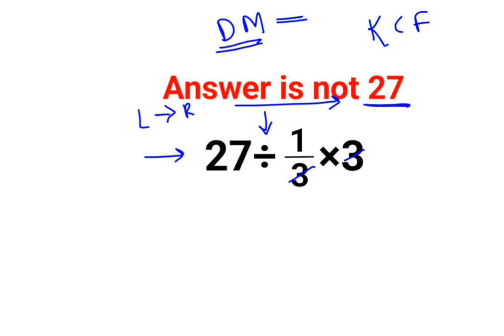So answer for this one comes out to be what? K stands for keeping the first number as it is. C stands for changing the division sign to multiplication. And F stands for flipping or taking reciprocal of 1 upon 3 which is 3. So 27 into 3 is 81 multiplied by 3. Answer comes out to be 243.